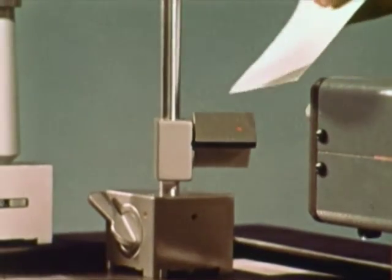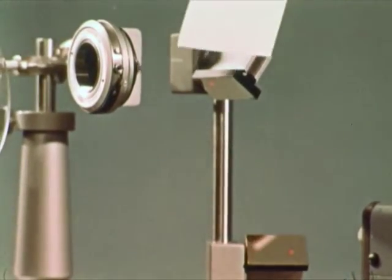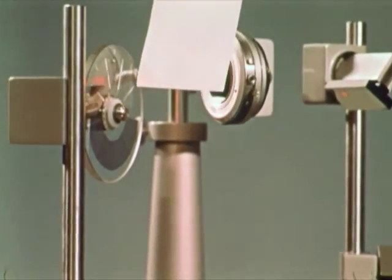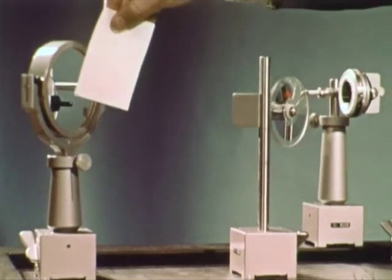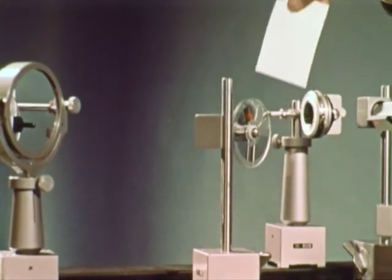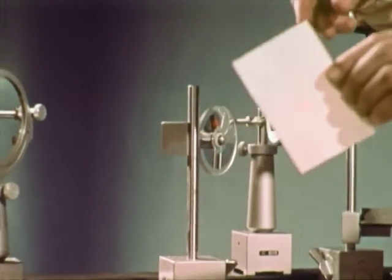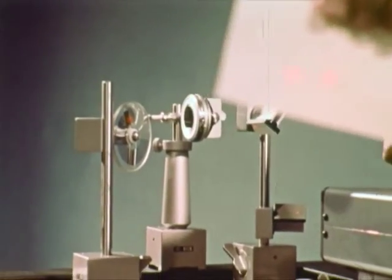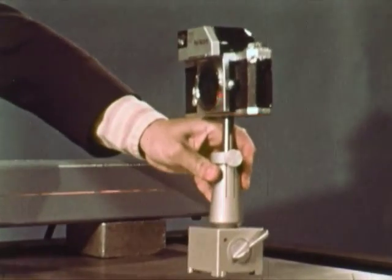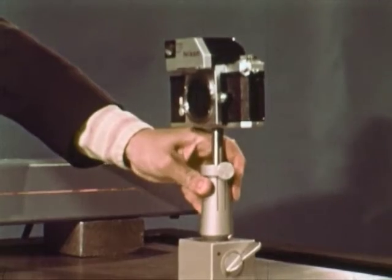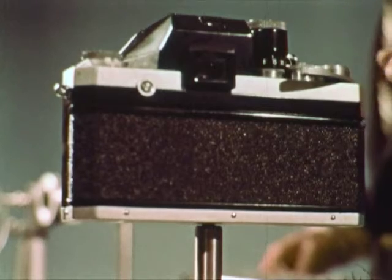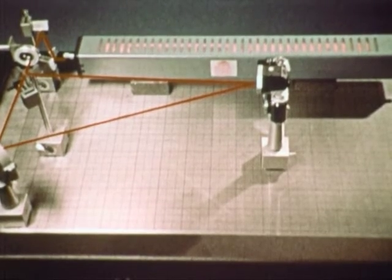Here is another demonstration using laser light. A partially silvered mirror allows half of the light to pass through while the rest is reflected. Where the two beams of light cross, we will place a film. Notice the camera has no lens, it is simply a film holder.